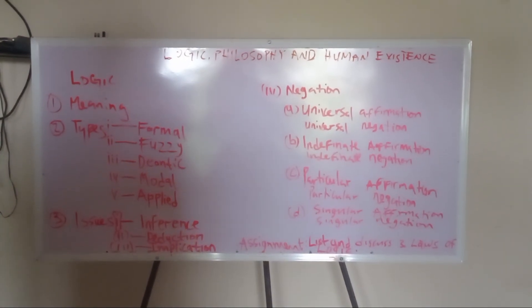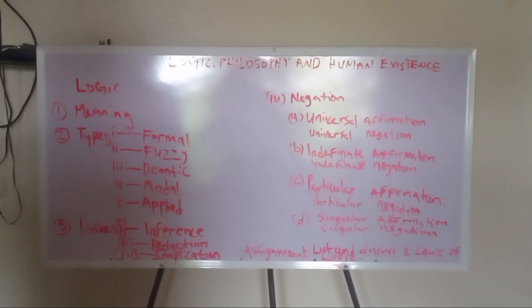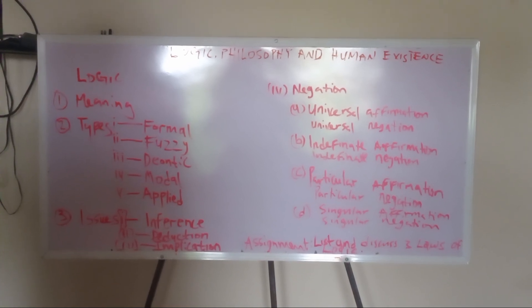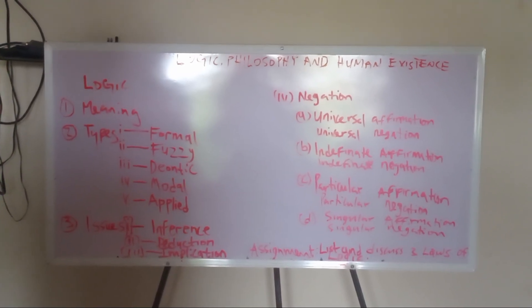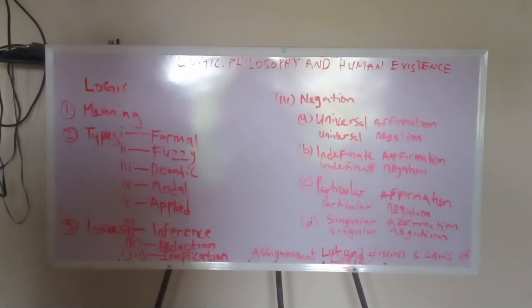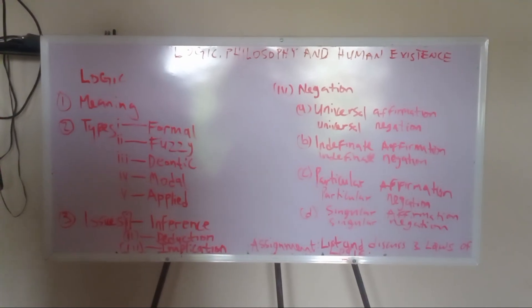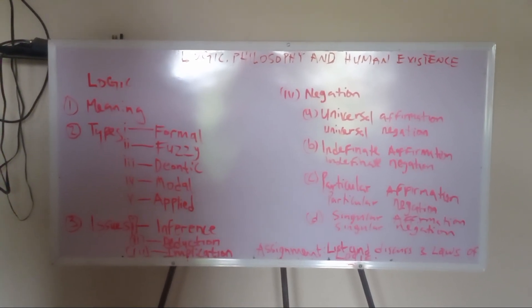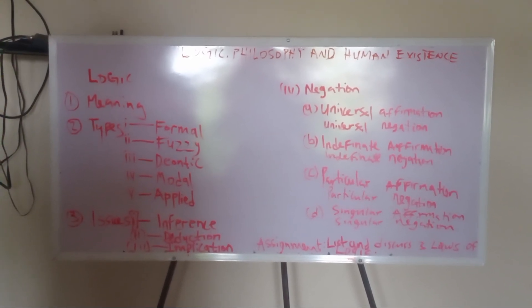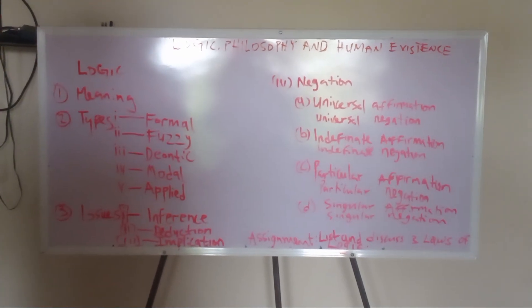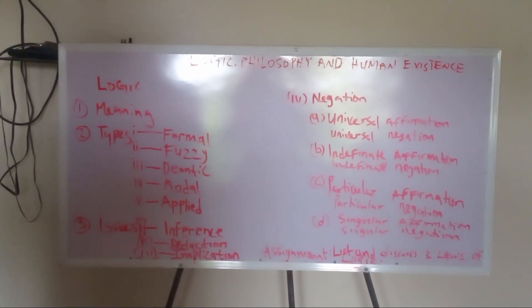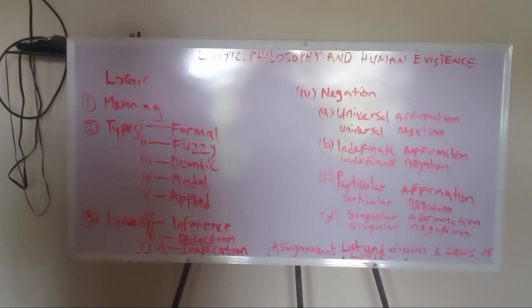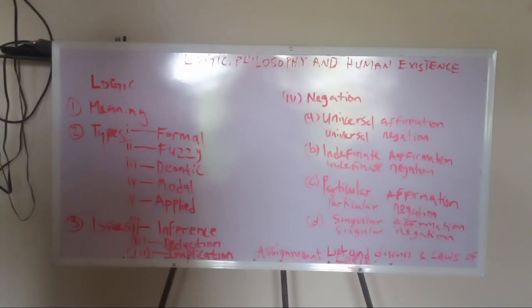Let's move to deontic logic. Deontic logic means something that is binding. What is permitted and what is obligatory, and at the same time, what is forbidden. Whatever is permitted, it means it is not forbidden. Whatever is obligatory, it means it is permitted. A classical example is that it is permitted for students to attend class or it is obligatory for students to attend class. It is forbidden for students to miss exams. Whatever is permitted cannot be forbidden at the same time. That is why it is called a binding logic.